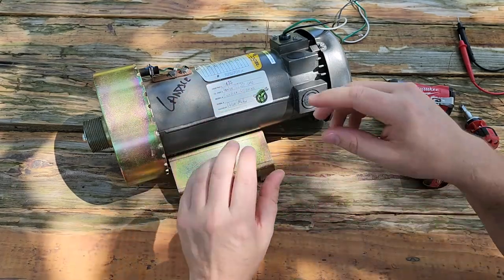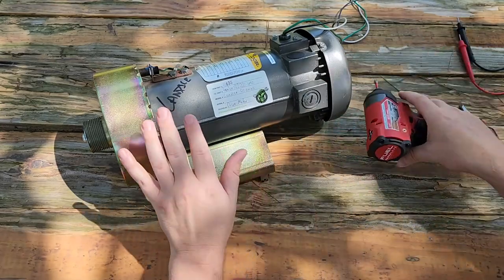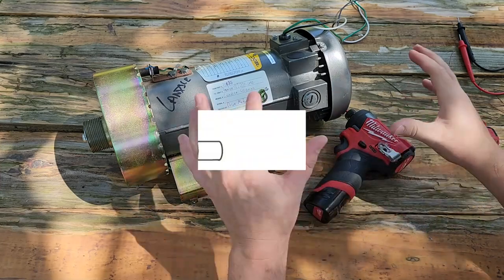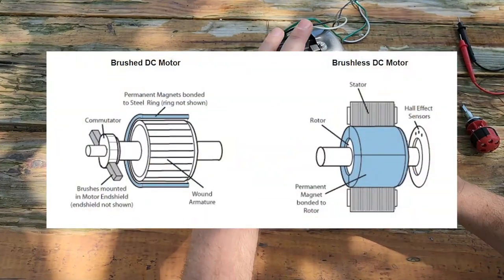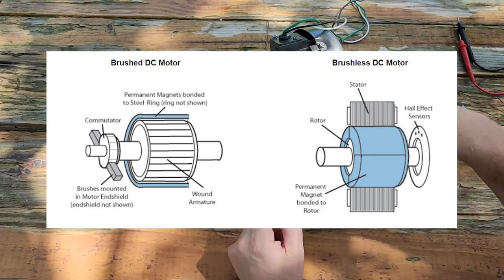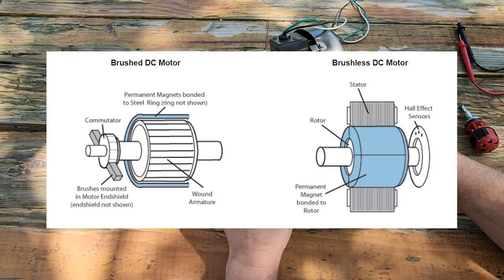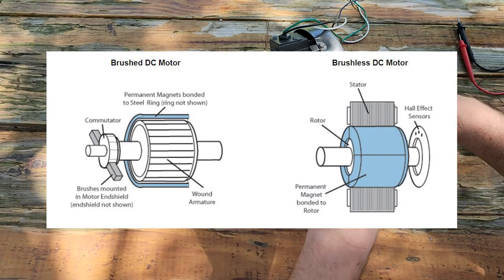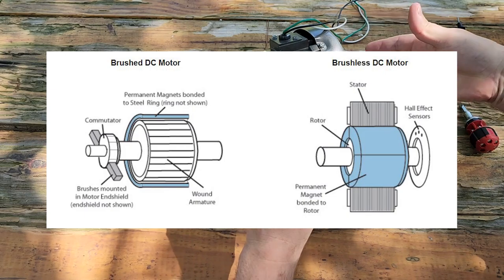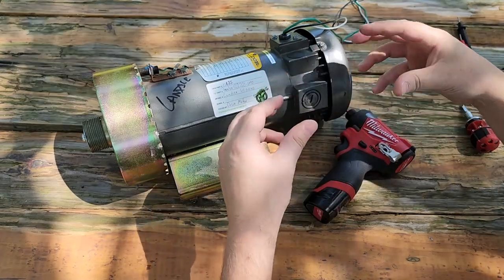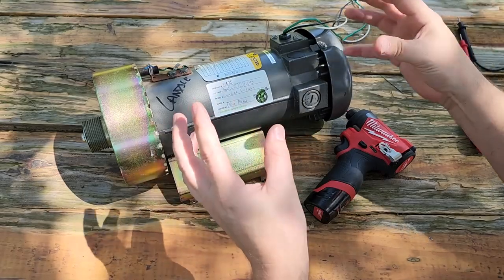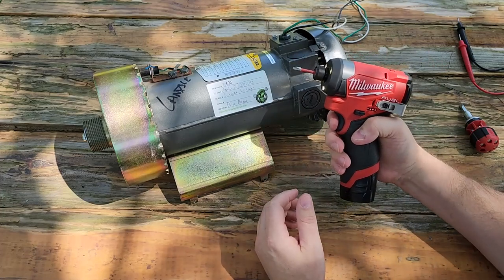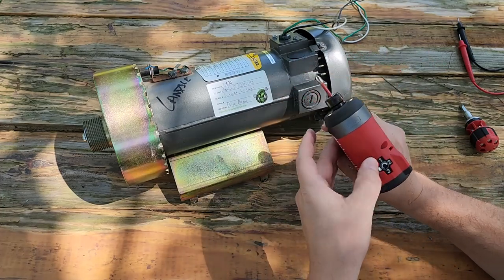The difference between brushed and brushless is that brushless uses electronic circuitry to rotate the field from one value to the next, whereas brushed uses a commutator - little bars - and those brushes ride on the bars. When it gets to those bars it changes the field to the next segment, and when it changes the field, your north and south magnets are always pulling and pushing each other.